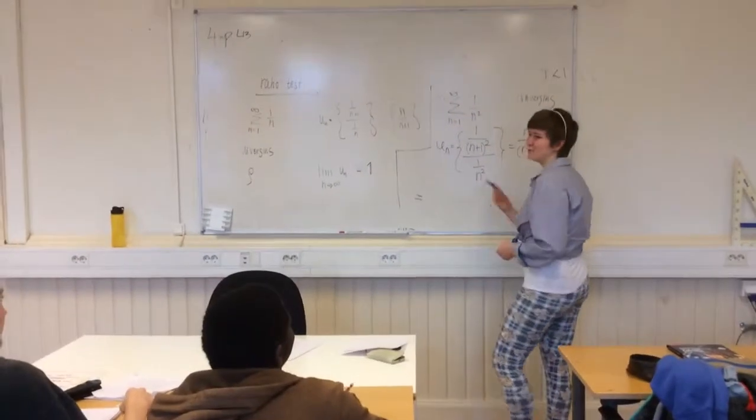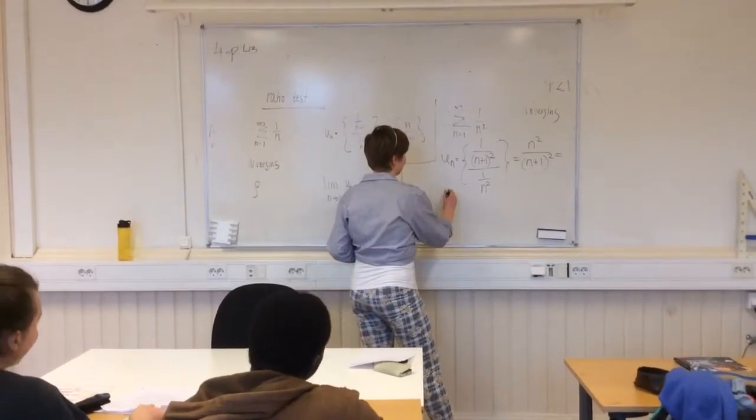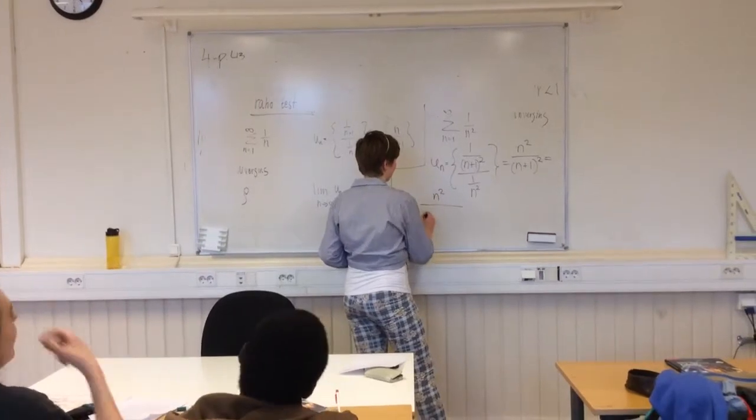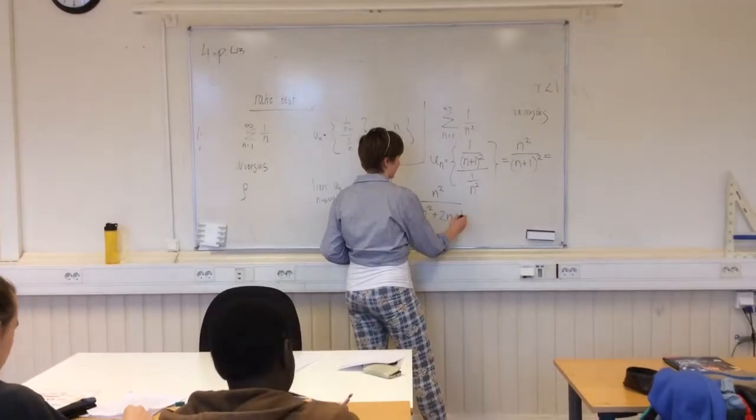On simplifying, which makes it harder: n² divided by n² plus 2n plus 1.